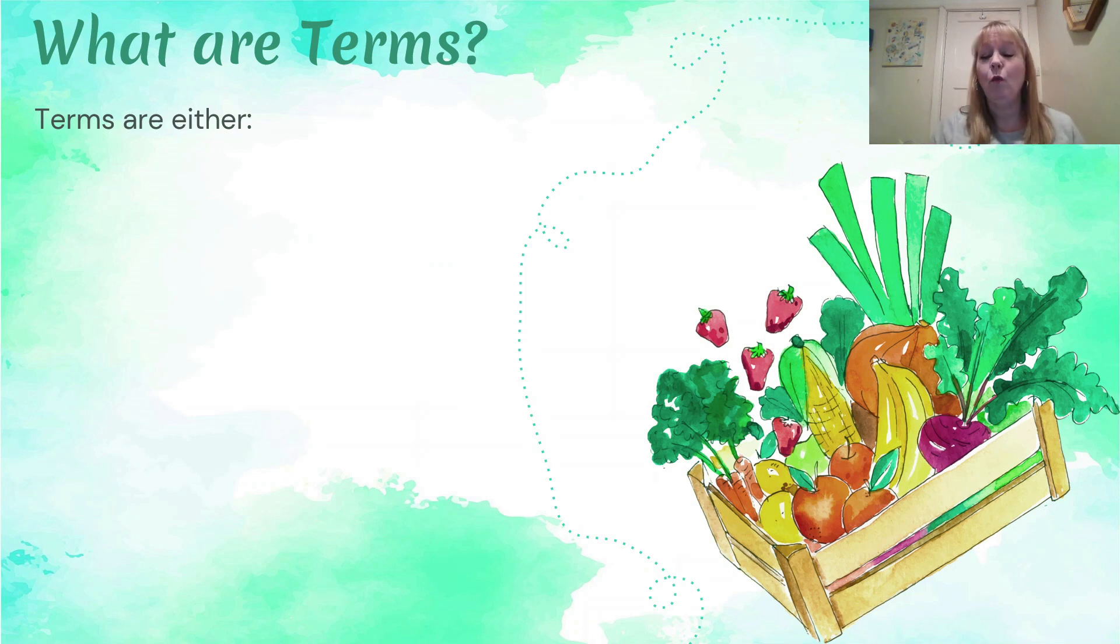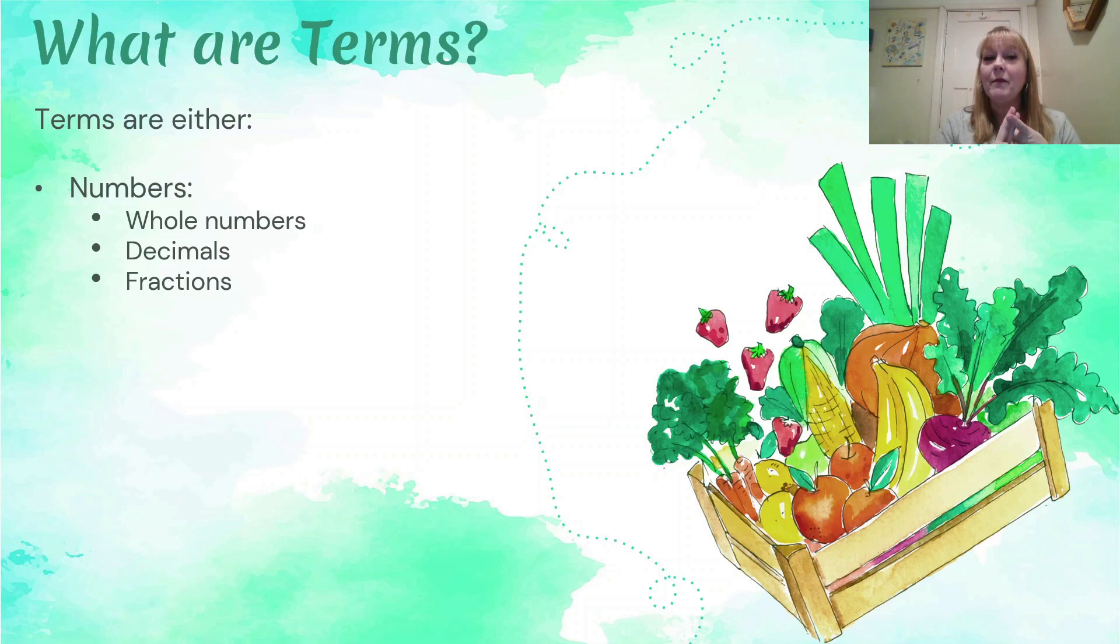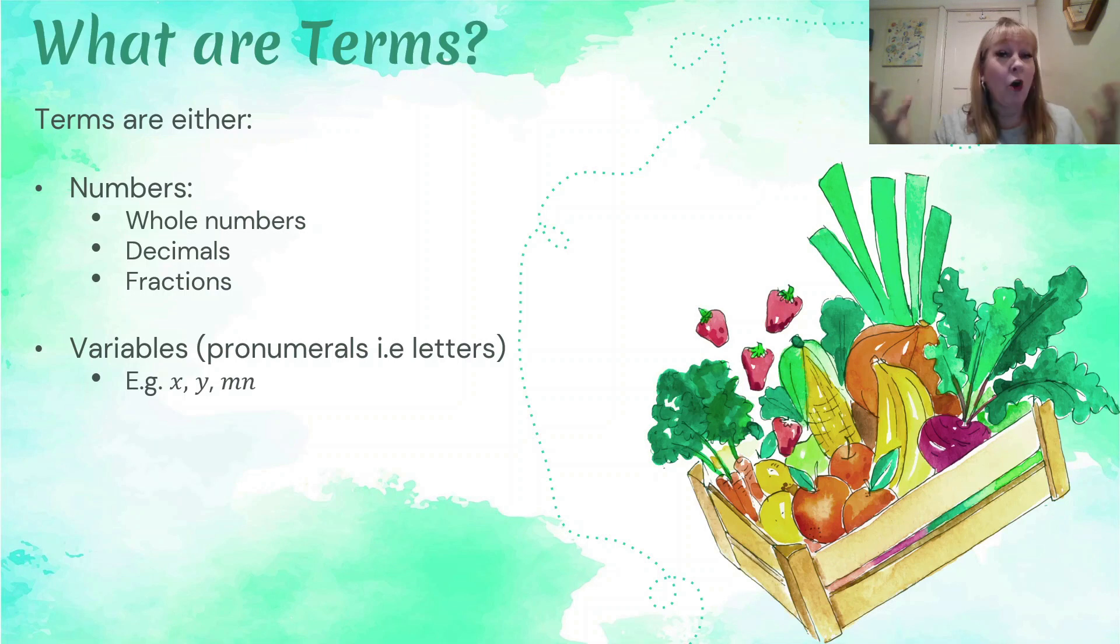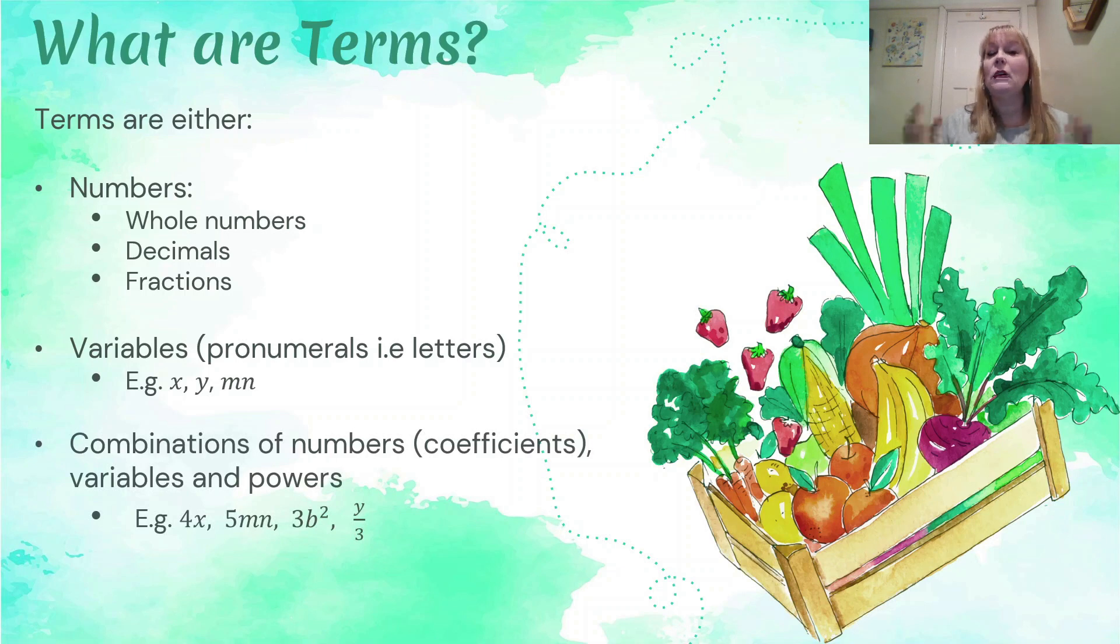Firstly, let's just recap what terms are. They can be numbers, so you've got whole numbers, decimals, and fractions. These are all kinds of terms. The second kinds of terms are our variables. You might think of those as the letters in algebra, also called pronumerals. For example, we've got the x's, the y's, m's, n's, combinations of the letters joined together, and letters on their own as well.